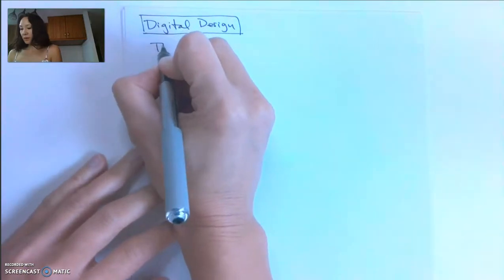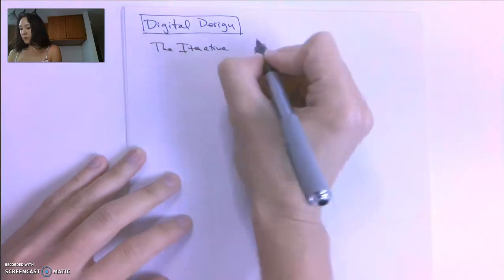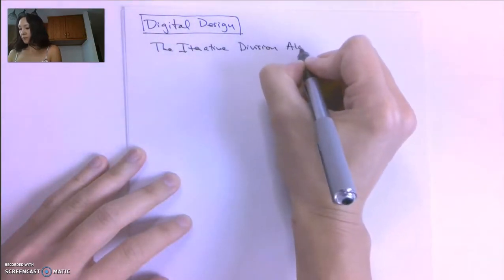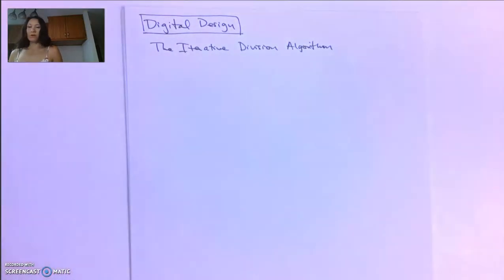So today I'm going to talk about the iterative division algorithm that we need in order to convert from decimal to other number bases, such as binary, hexadecimal, or octal.